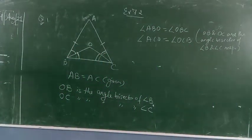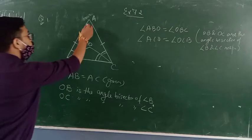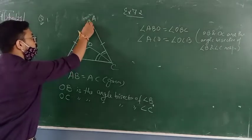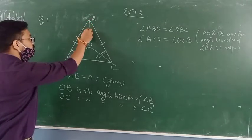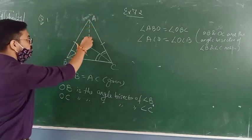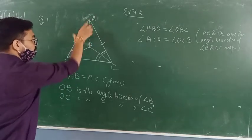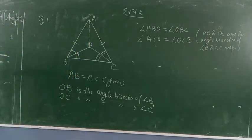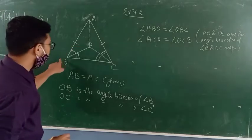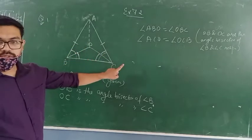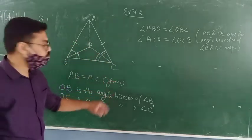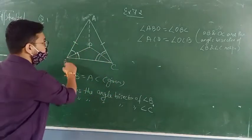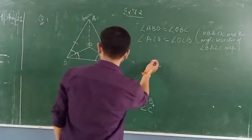Now join A to O — this is given in the question, so I have joined A and O. Now show that OB equals OC — this you need to prove.